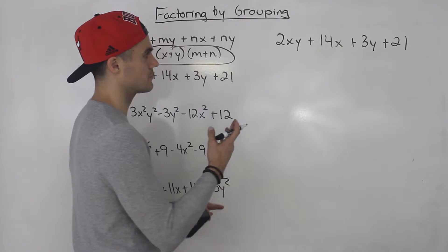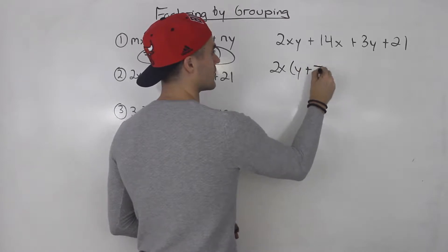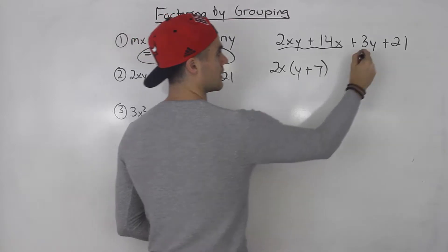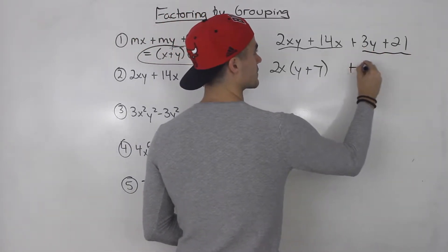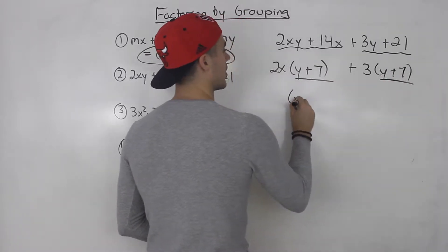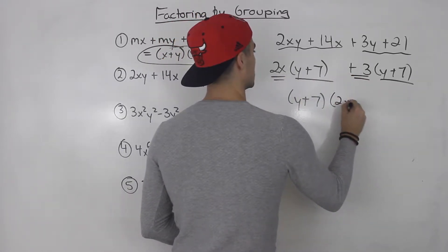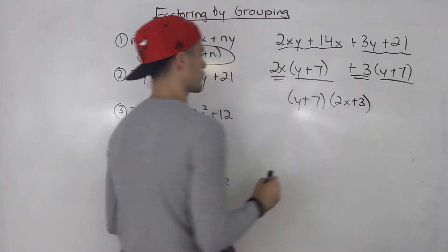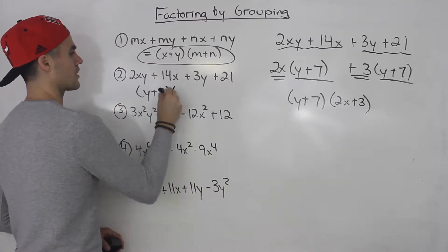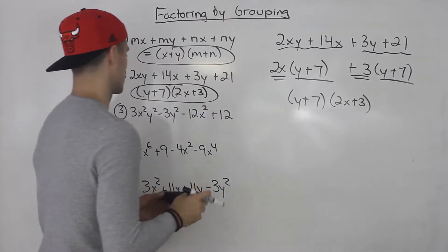Sometimes you want to check before even doing anything. So if we take out a 2x, we're left with y plus 7 from the first two. Then these last two factor — take out a 3, left with y plus 7. And then again, we could take out a y plus 7, and we're left with 2x plus 3. So this would be y plus 7 times 2x plus 3.